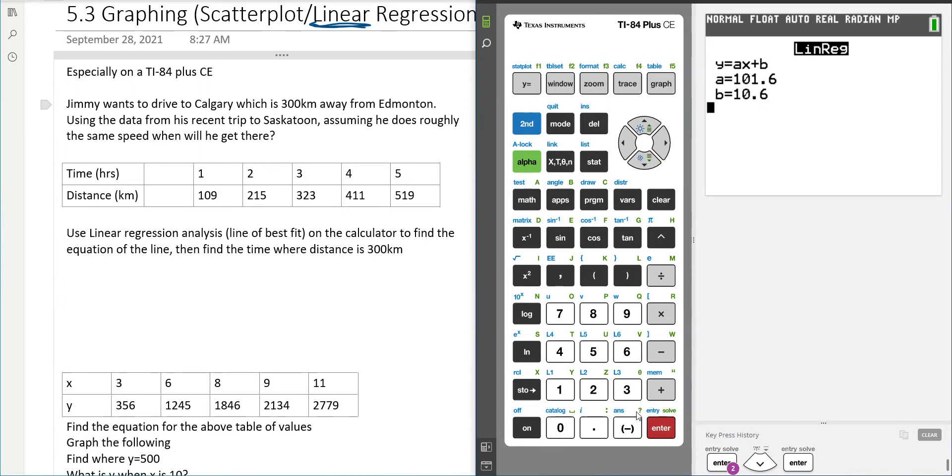Okay, so it just got us a linear regression or a linear function. So this is showing y equals ax plus b, and it tells us that a is 101.6 and b is 10.6. So what we can do here is instead of writing a and b, we can actually write the values. So 101.6x plus b which is 10.6.